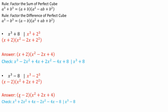We can always check by expanding. x times x² is x³. x times 2x is 2x². x times 4 is 4x. -2 times x² is -2x². -2 times 2x is -4x. And -2 times 4 is -8. So 2x² cancels with -2x², and 4x cancels with -4x, leaving x cubed minus 8. And that's all we need to do for these types of problems.